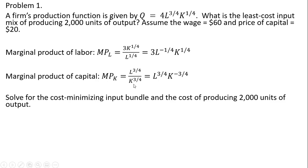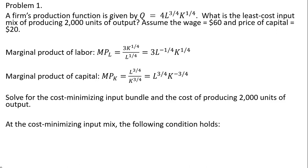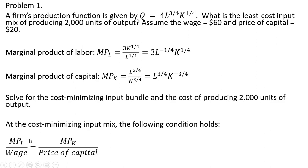Likewise, the marginal product of capital can be written with K raised to the minus three-fourths power by moving the denominator into the numerator. We want to solve for the cost-minimizing input bundle — how many units of labor and capital to employ to produce 2,000 units at the lowest possible cost. The key is to use the cost-minimizing input mix condition: the marginal product of labor divided by the wage equals the marginal product of capital divided by the price of capital.